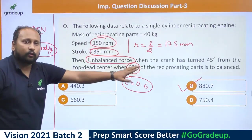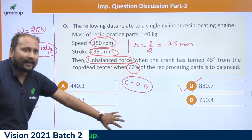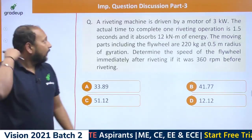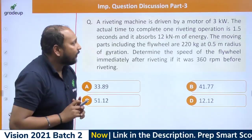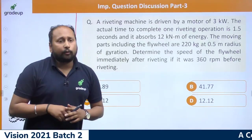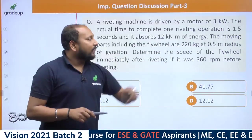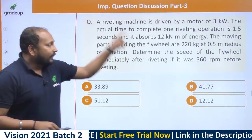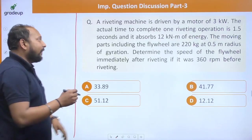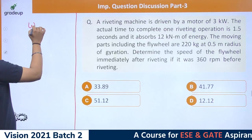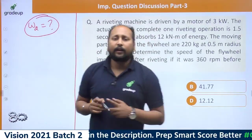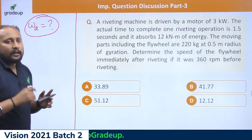Let us discuss the second question — a very important problem. A riveting machine is driven by a motor of 3 kW. The actual time to complete one riveting operation is 1.5 seconds and it absorbs 12 kN·m. The moving parts including the flywheel are 220 kg at 0.5 m radius of gyration. Determine the speed of the flywheel immediately after riveting if it was 360 rpm before riveting. You have to calculate omega₂ after riveting.